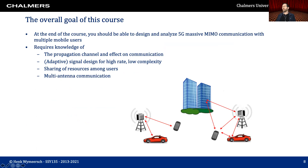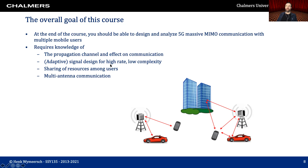The overall goal of this course is to get enough knowledge of wireless communication systems to start at a communication company like Ericsson or Huawei. More specifically, you should be able to design and analyze 5G communication systems, in particular for massive MIMO, which involves very large arrays at the base station with many mobile users. We will learn about the propagation channel, signal design for high-rate communication at low complexity, resource sharing between users, and multi-antenna communication.